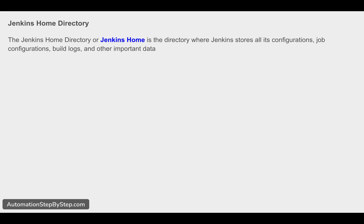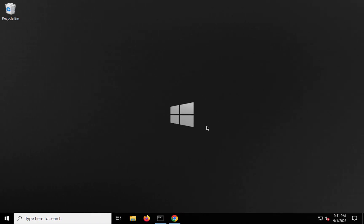Jenkins home directory, or as we generally refer to it, Jenkins home, is a folder where all the configuration, all the data, all the details, all the job configuration, build logs, and all the logs are present. So all the data of your Jenkins is present in this particular folder or directory, which is called Jenkins home.